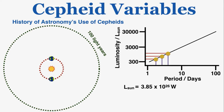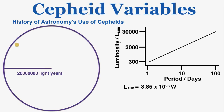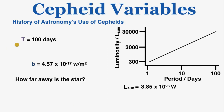Now that they had this information, they could find the distance to any variable star they could observe — and the farthest variable star we can observe is about 20 million light-years away. As an example: looking at a variable star far beyond parallax range, they could observe that the star has a period of 100 days and a brightness of 4.57 × 10⁻¹⁷ W/m² observed on Earth. Using Leavitt's graph, they no longer needed parallax — they could use the period to find luminosity and plug that into the brightness equation.